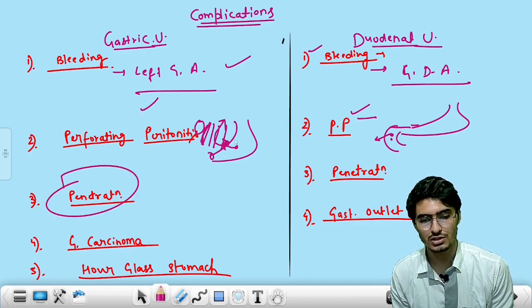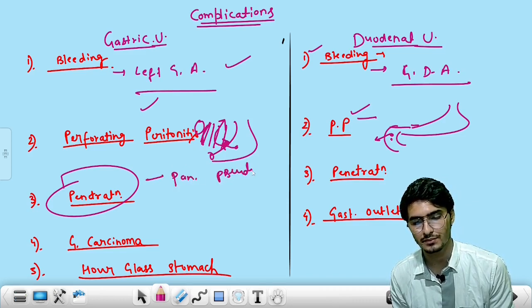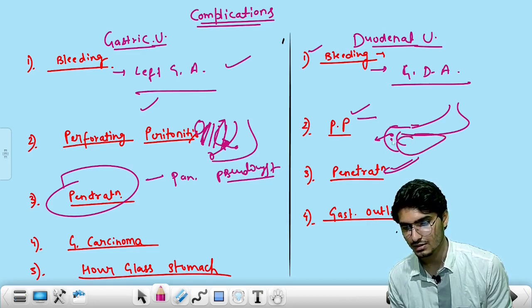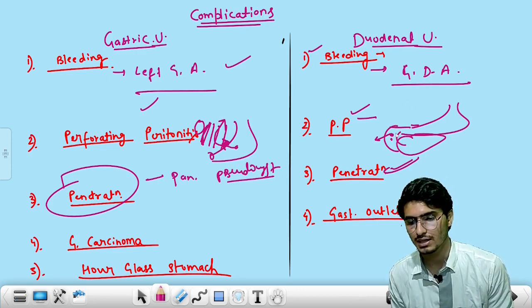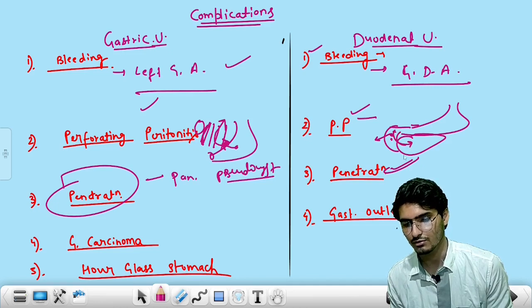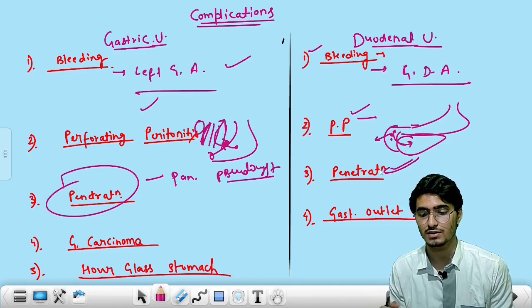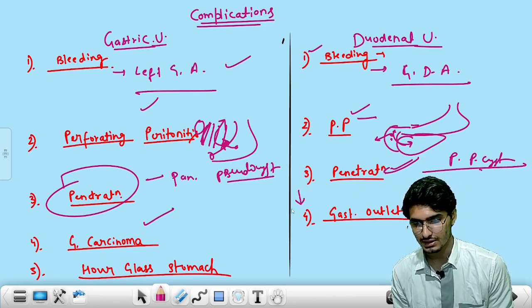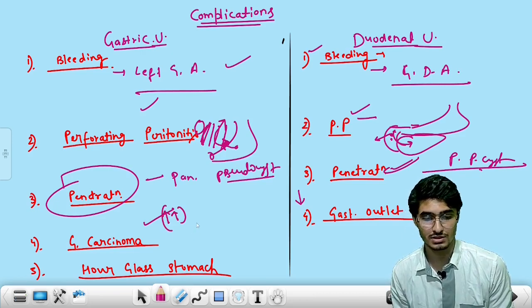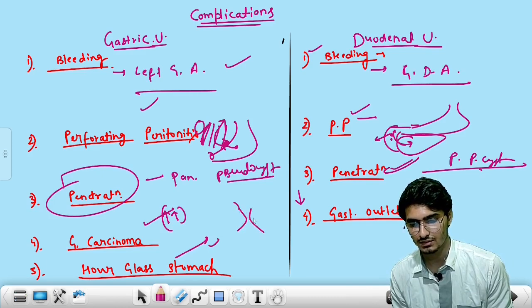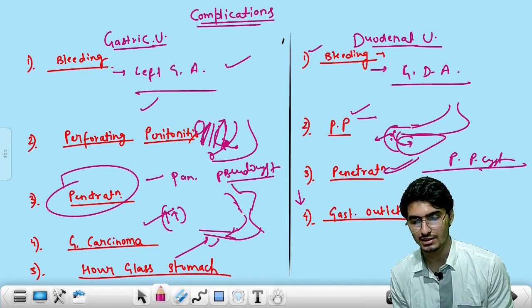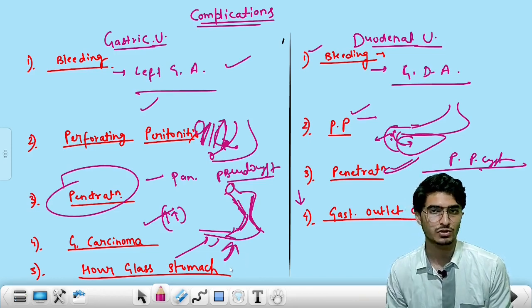Penetration: penetration of duodenal ulcer into the pancreas causes pancreatic pseudocyst. Inflammatory fluid damages the pancreatic parenchyma, resulting in pancreatic pseudocyst. Carcinoma risk is very low with duodenal ulcers but increased with gastric ulcers. Hourglass stomach: due to massive inflammation and fibrosis/stricture formation, the stomach looks like an hourglass. This is one of the complications of stricture formation in the stomach.